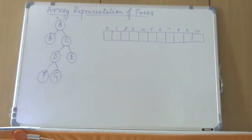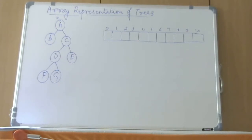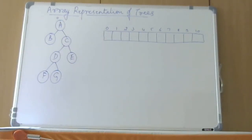Hello students. In the last video session, we had started to see how we can represent trees. There are two ways to represent trees: one is using array representation, the other is using linked list representation. Before we move on to the linked list representation, let us see how we can represent trees using arrays. I think we saw one example in the last video session, so let me take a few more examples.